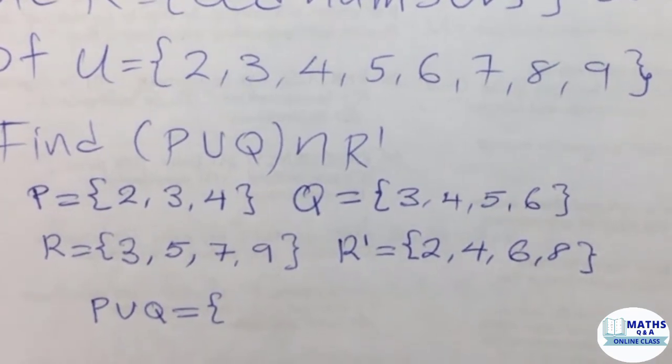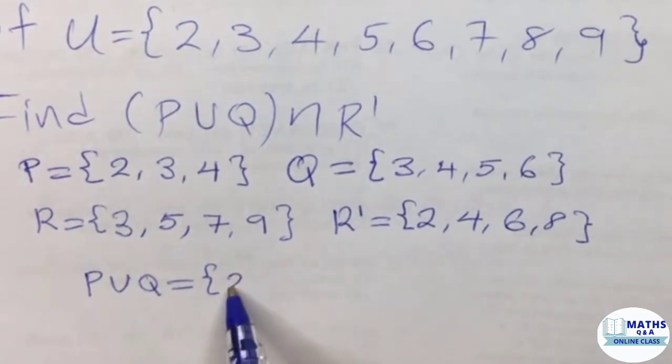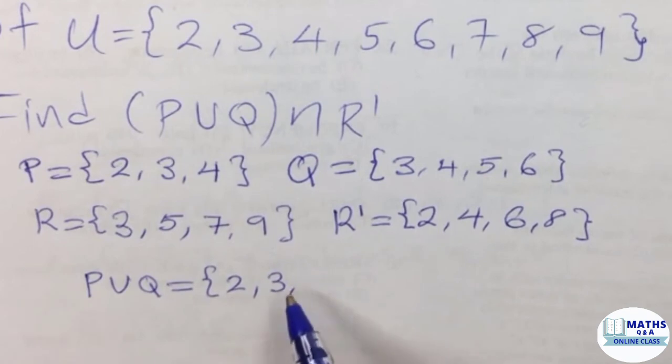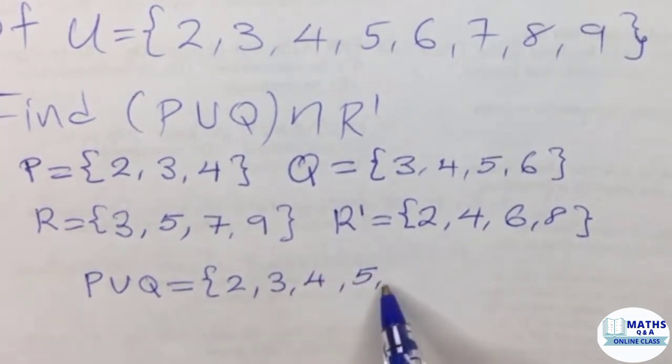So let's see. We have 2, we have 3, we have 4, we have 5, and then we have 6. So that ends the union of P and Q.